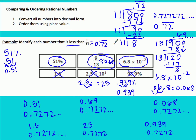Whenever you're given a list or asked to compare multiple rational numbers, make sure you first change them into decimal form. Then you can order them using their place value. Use that stacking method as a way to compare them.